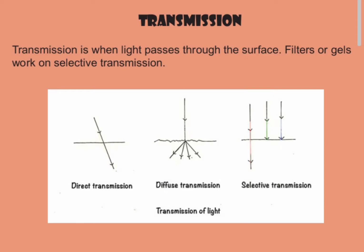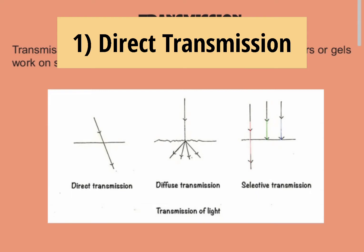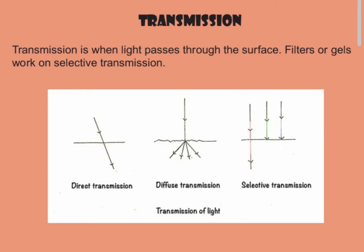Next is transmission — when light passes through a surface. Filters or gels work on selective transmission. There are three types of transmission. The first is direct transmission, when light goes through an object with no change in direction or quality. Examples include glass or air.